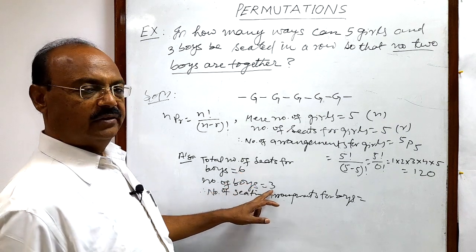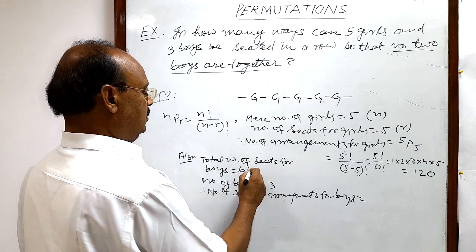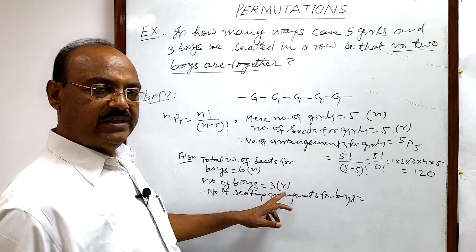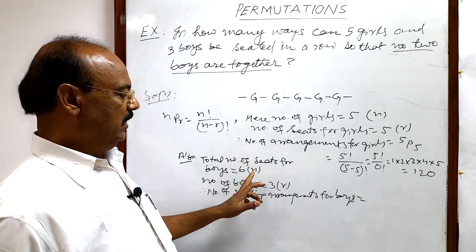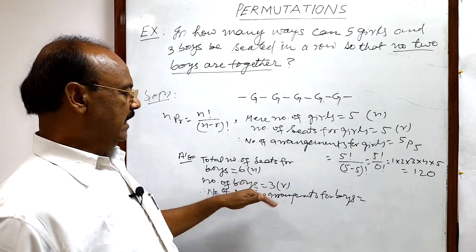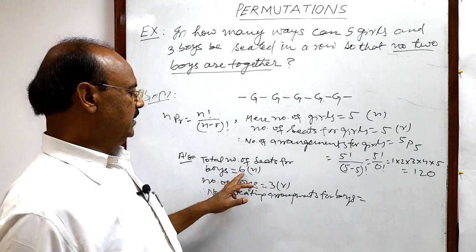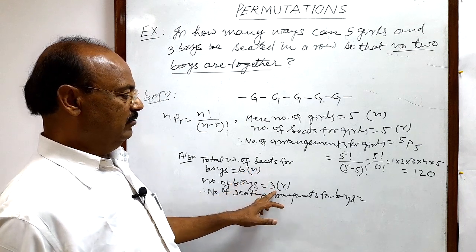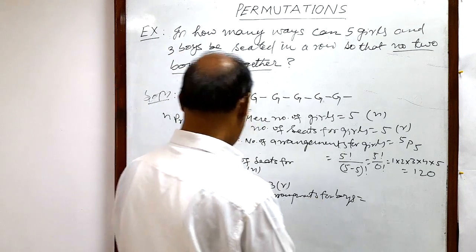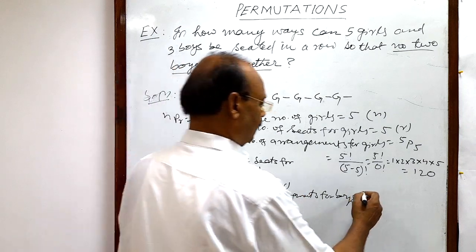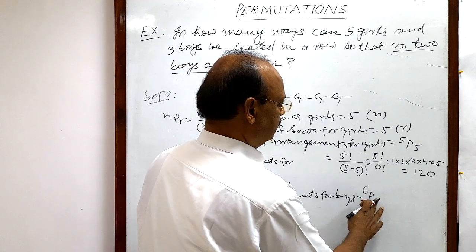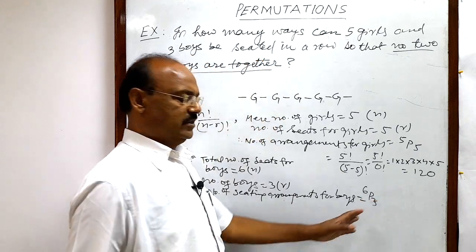So total seating arrangements for boys is six P three. This can be supposed as N, this can be supposed as R. R is always smaller than N, may be equal. But R cannot be greater than N. So six will be N and three will be R. So total seating arrangements for boys is six P three. Now let us calculate it.